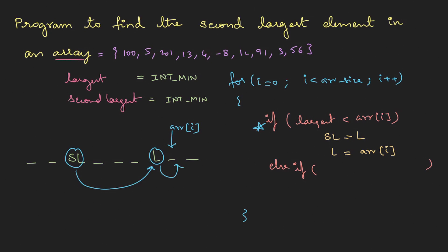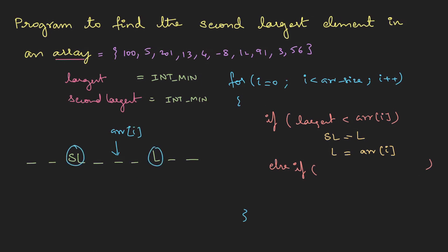We change second largest to the old largest value and largest to the new value — that works perfectly. The second possibility is the element could be less than largest but greater than second largest. In that case, I'll only change the second largest value to the new value. The third possibility is the element could be less than both — we don't need to worry about that case.